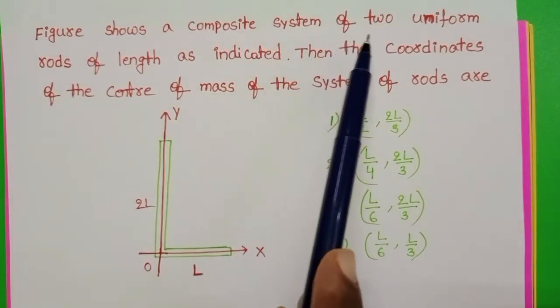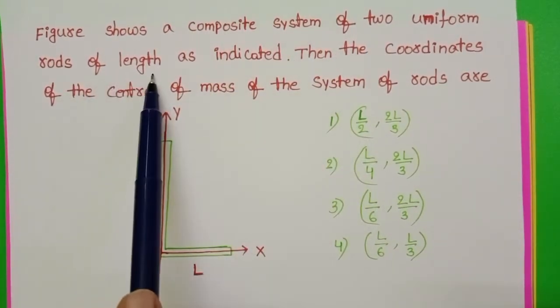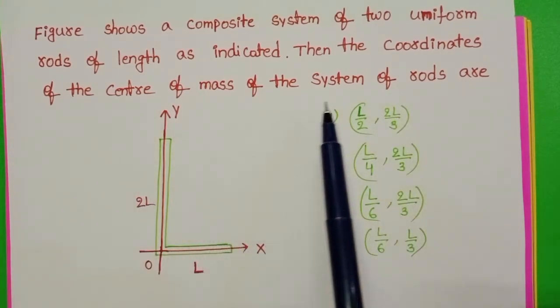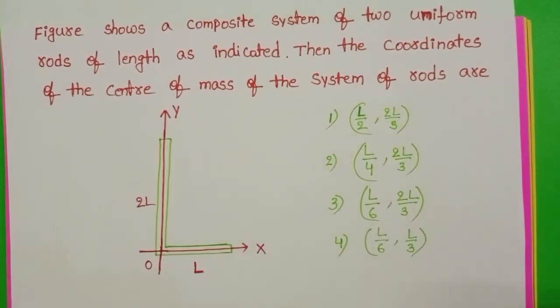Figure shows a composite system of two uniform rods of length as indicated. Length of the first rod is L and second rod is 2L. Then the coordinates of the center of mass of the system of rods are.